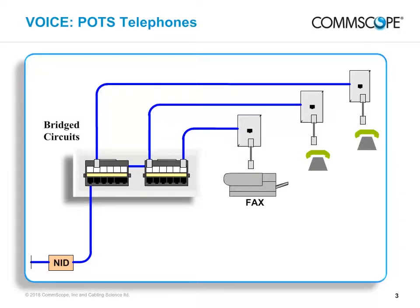A phone line is delivered to a house over a twisted pair cable with multiple pairs. Many phone companies use fiber optic cables in some form to distribute phone lines from central offices to neighborhoods, but the line is always converted back to twisted pair copper before it enters a house. Each phone line uses a single pair of wires referred to as tip and ring. A single phone line can ring several phones, and an incoming call can be answered by any of the phones connected to the line. It is possible to have multiple phone lines enter a house on a single cable, each on its own twisted pair, each with its own phone number.